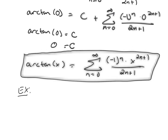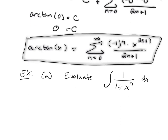In part A of this problem, we're going to evaluate the integral of 1 over 1 plus x to the 7th dx as a power series. If we forget about the power series instruction and try to evaluate this integral using all our techniques — substitution, trig integrals, integration by parts — none of them work. This is an example of an integral we can't compute with standard techniques.